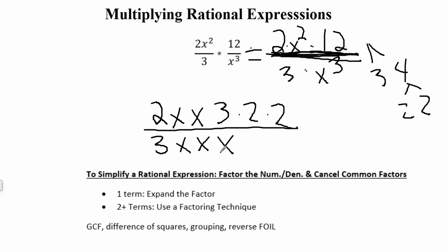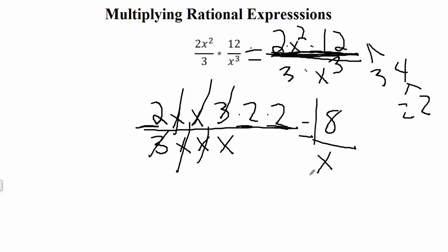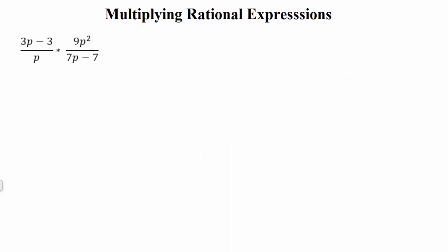Now that everything in the numerator and denominator is factored, we can cancel common factors. A 3 cancels with a 3, and two of those x's cancel. In the numerator we're left with 2 times 2 times 2, which is 8, over one remaining x in the denominator. So the solution is 8 over x.